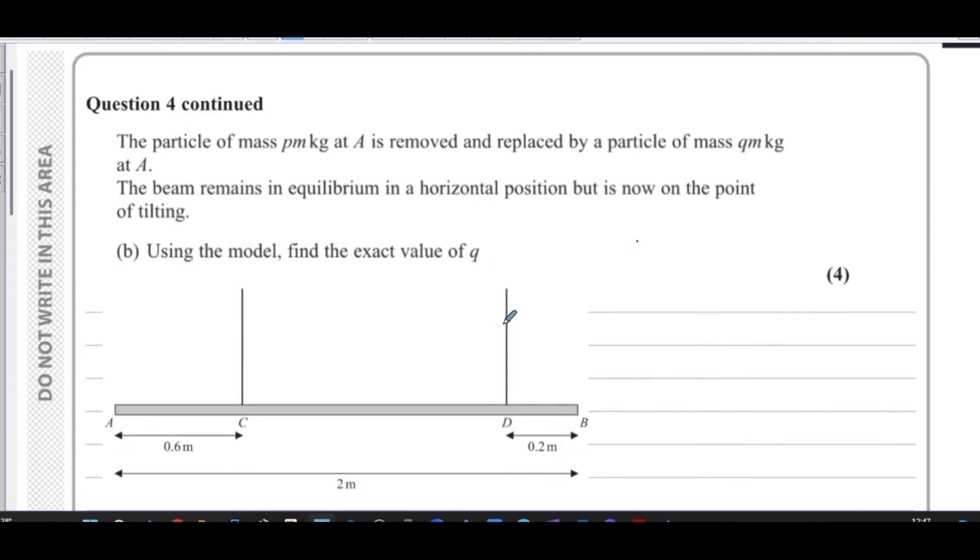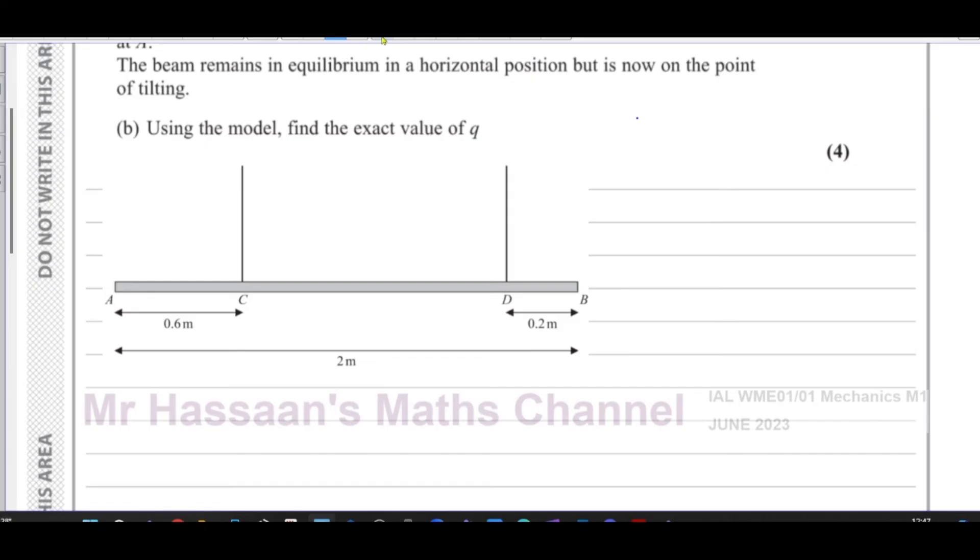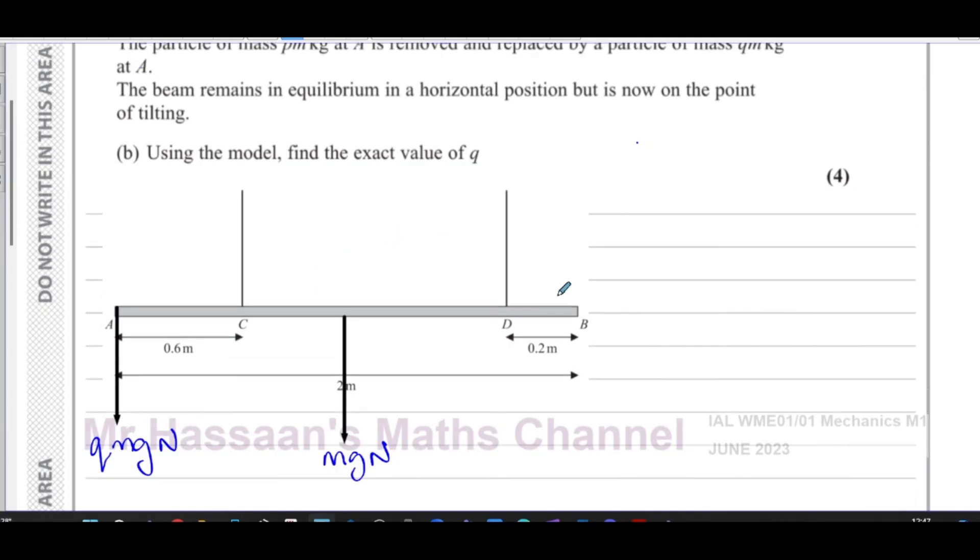The beam remains in equilibrium in a horizontal position, but is now on the point of tilting. Using the model, find the exact value of Q. We have the same situation in terms of the same weight of the actual beam, which is mg newtons. But what's different now is the fact that this particle that was Pm kilograms is now replaced with Qm kilograms. So it's Q times mg newtons is the force acting here now.